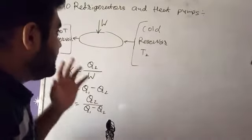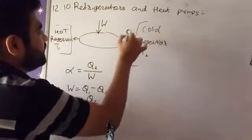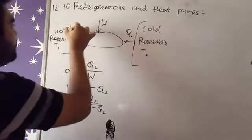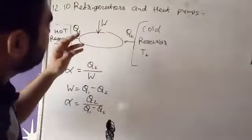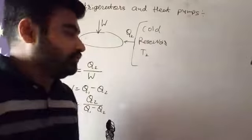Q2 is the energy from the cold reservoir, here from cold reservoir, and Q1 is also here, heat energy which is given by the system to the hot reservoir.